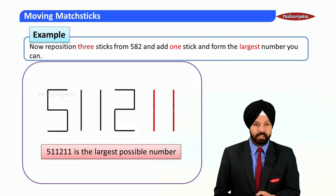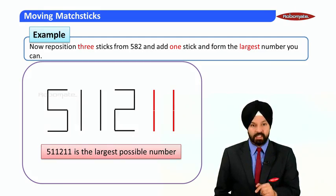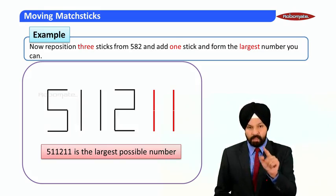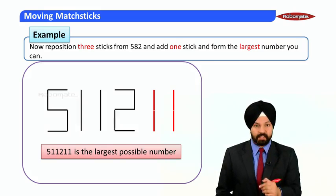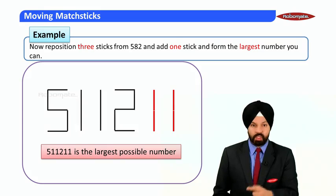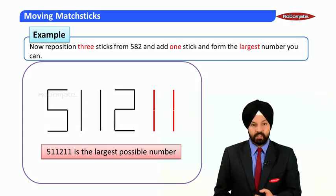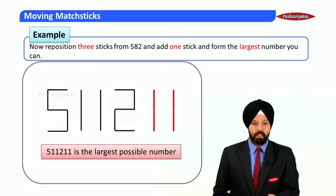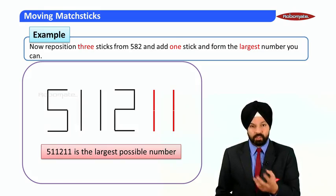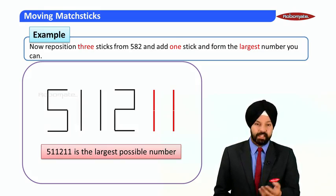So the concept which we have learned through this particular question is that whenever there is a number 8 and you have to pick three matchsticks, you should pick those three matchsticks like this. This will increase the size of the number to one more digit. I hope you must have got this concept. Let's move ahead.